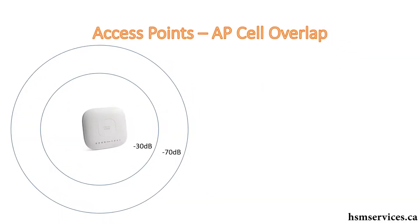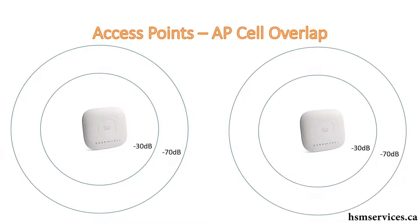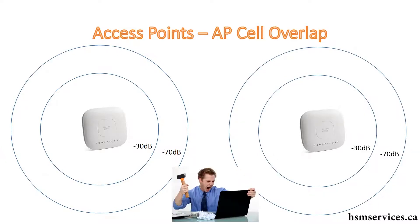We do want to have some overlap between two different cells. In this case, if we install our second AP too far away, there's no overlap and we have this huge area in the middle with no coverage whatsoever. That's going to be a problem for a user sitting at his desk — neither AP is giving him the coverage he needs, so he's got a very lousy signal and his internet is going to be slow.